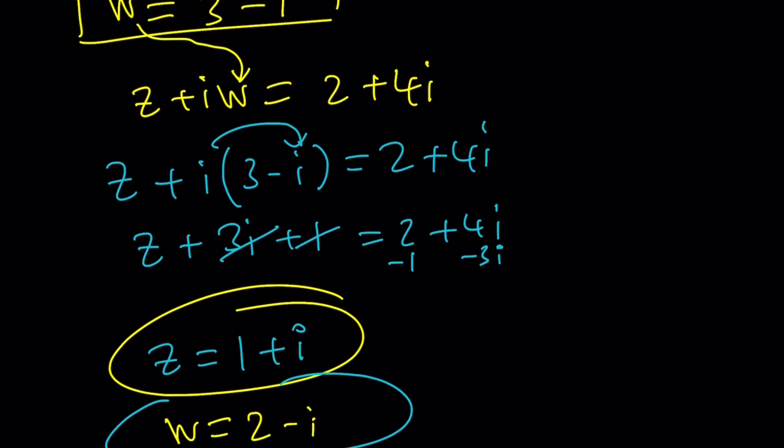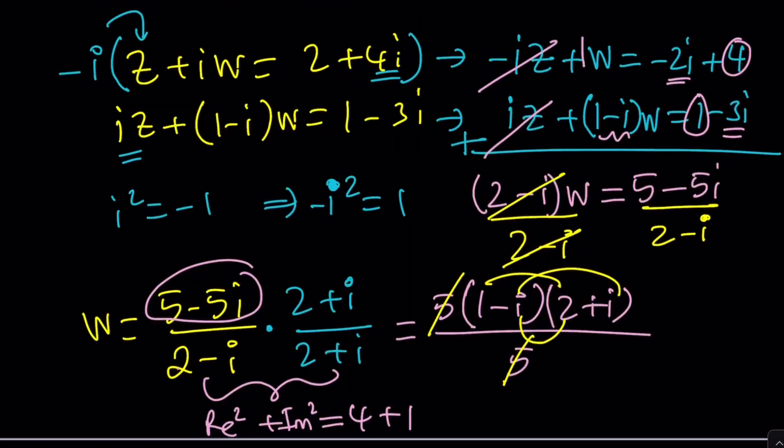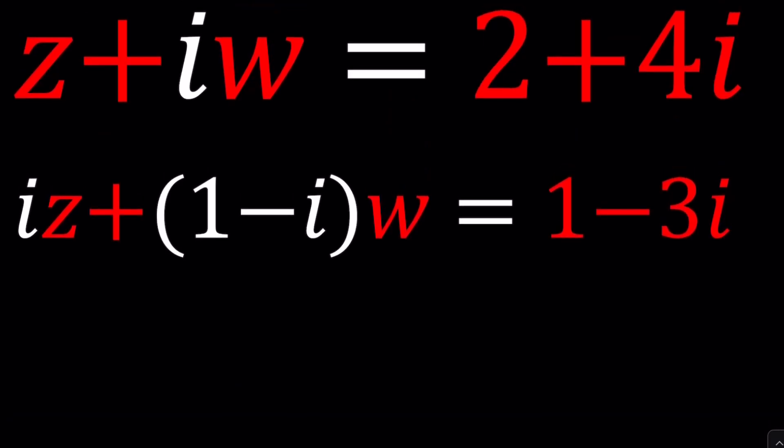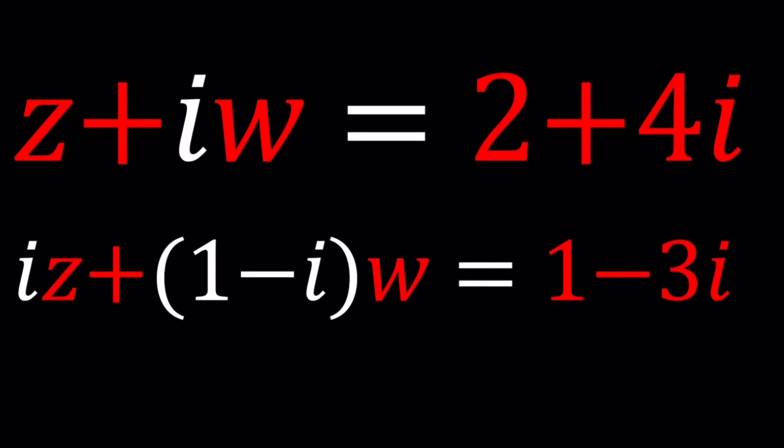Now, is there another way to solve this system? Let's briefly talk about it. Could we use substitution? Yes, definitely. So one of the things you can do—I'm going to leave it as an exercise for you. Don't hate me for that, please. But you can isolate Z from the first equation.